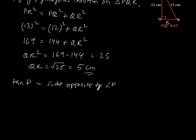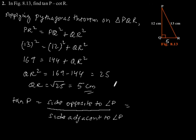So side opposite to angle P is QR and adjacent to angle P is PQ. So tan P equals QR by PQ.